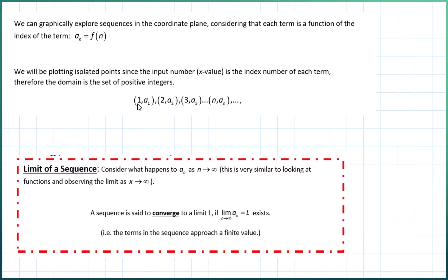So we'll plot the points (1, a₁), (2, a₂), (3, a₃), and so forth. That's going to give us a really nice visual sense of what's happening to our sequences as the n value, as the number of terms in the sequence, approaches infinity.